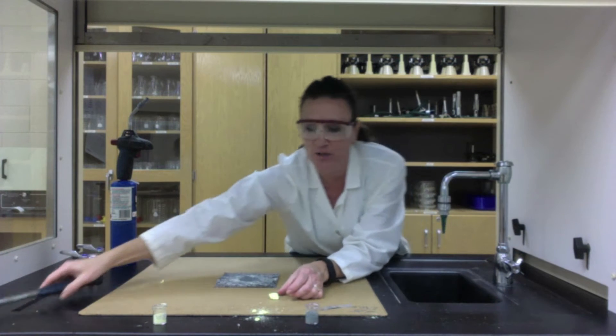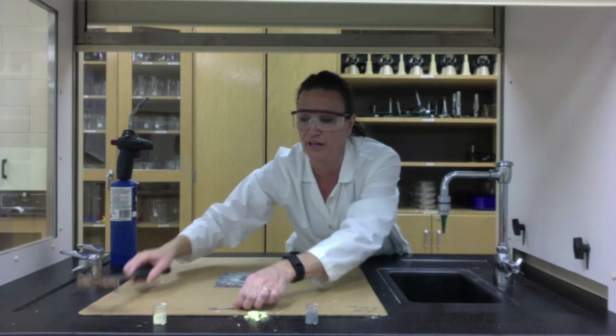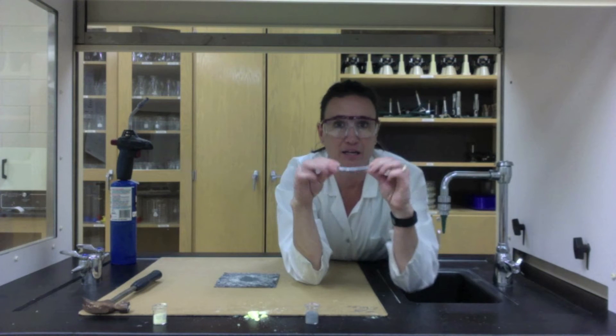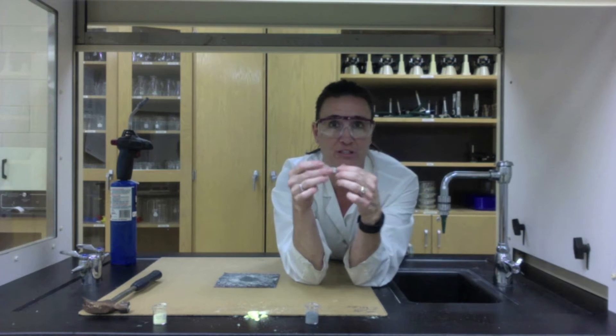If you hit it, it'll break into pieces, whereas a metal, if hit with a hammer, will stay in its shape or you can bend it into a different shape, which is what malleable means.